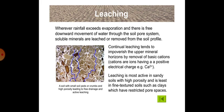Now we will discuss about leaching. Wherever rainfall exceeds evaporation and there is a free downward movement of water through the soil, soluble minerals are leached or removed from the soil profile. Continual leaching tends to impoverish the upper mineral horizons by removal of basic cations — ions having a positive electrical charge. Leaching is most active in sandy soils with high porosity and least in fine-textured soils such as clays, which have restricted pore spaces. A soil with small crumbs and high porosity leads to free drainage and active leaching, as shown in the figure.